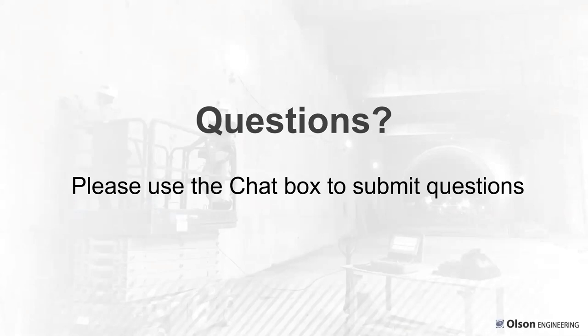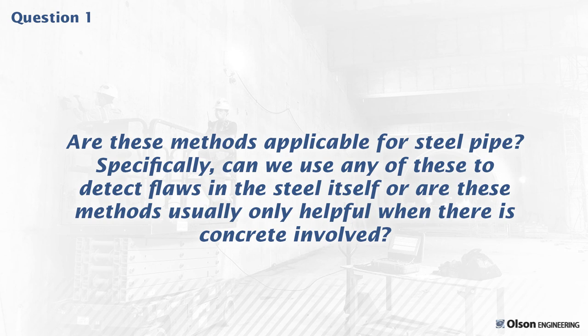Q&A: Are these methods useful for steel pipe, and can they detect flaws in steel itself? Yes — ultrasonic thickness testing is very good for checking corrosion of the pipe itself. There's a two-pronged approach: ultrasonic thickness for the pipe steel, and if it's bonded, you can see deeper into the concrete behind it. Impulse response can be used to look at the general stiffness of the section. But if it's truly de-bonded — air-gapped — you won't see deeper.